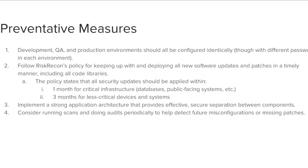Follow RISC-RECON's policy for keeping all applications up to date, including code libraries. The policy requires prioritization of critical infrastructure, such as databases and public-facing systems, over less critical internal devices, and ensure that patches are applied within one month for critical infrastructure and three months for less critical devices and systems. Implement a strong application architecture to ensure effective secure separation between components.